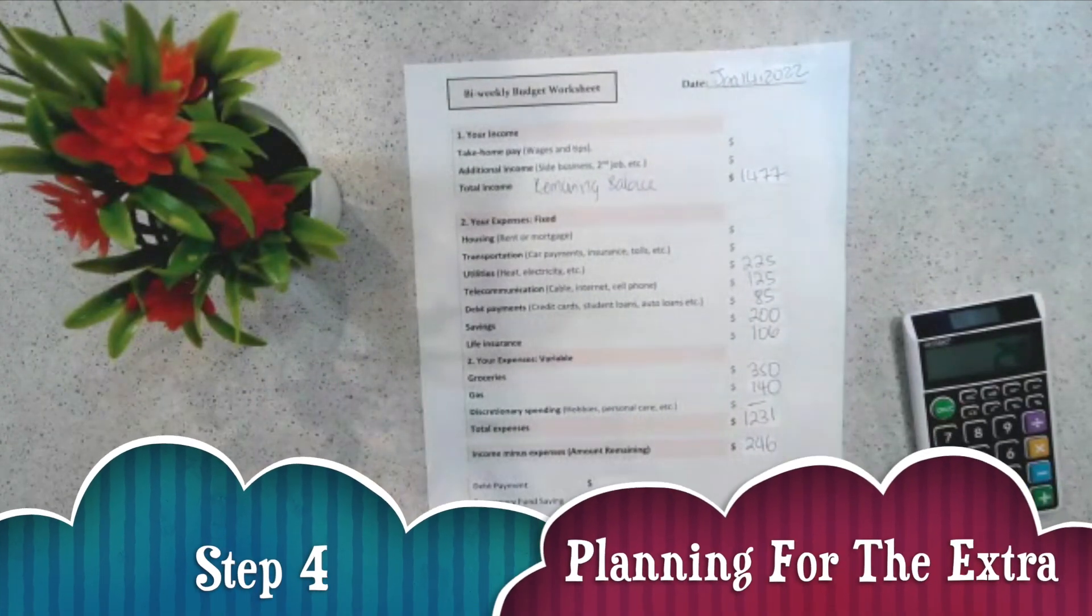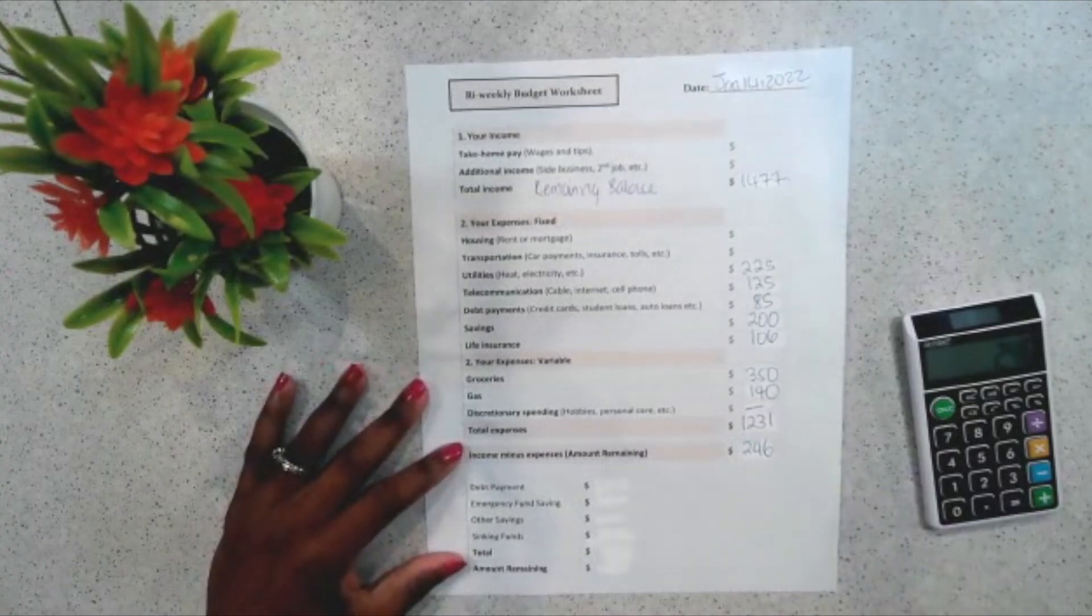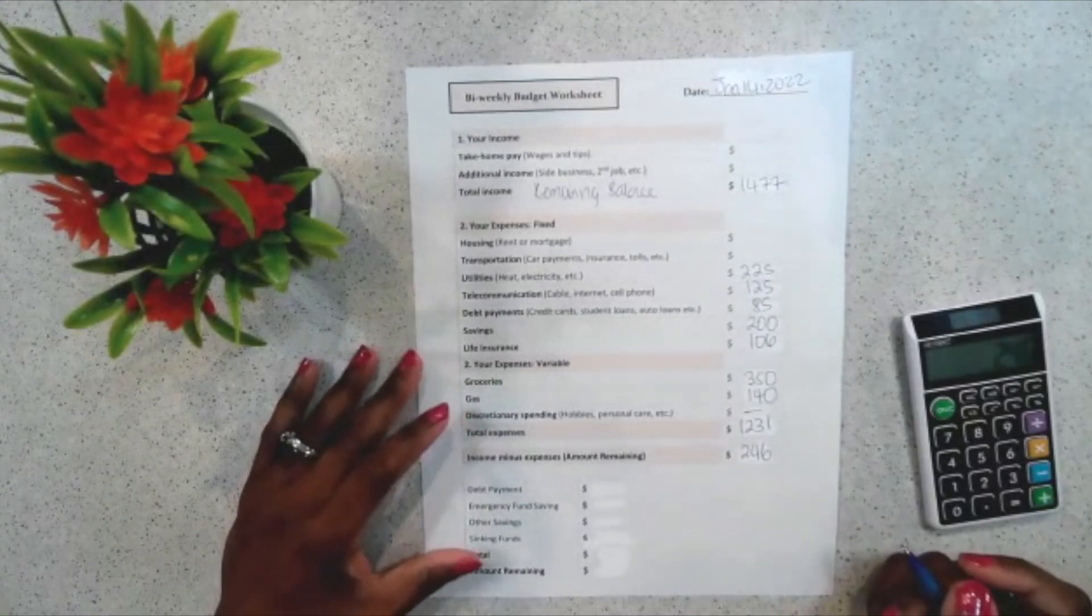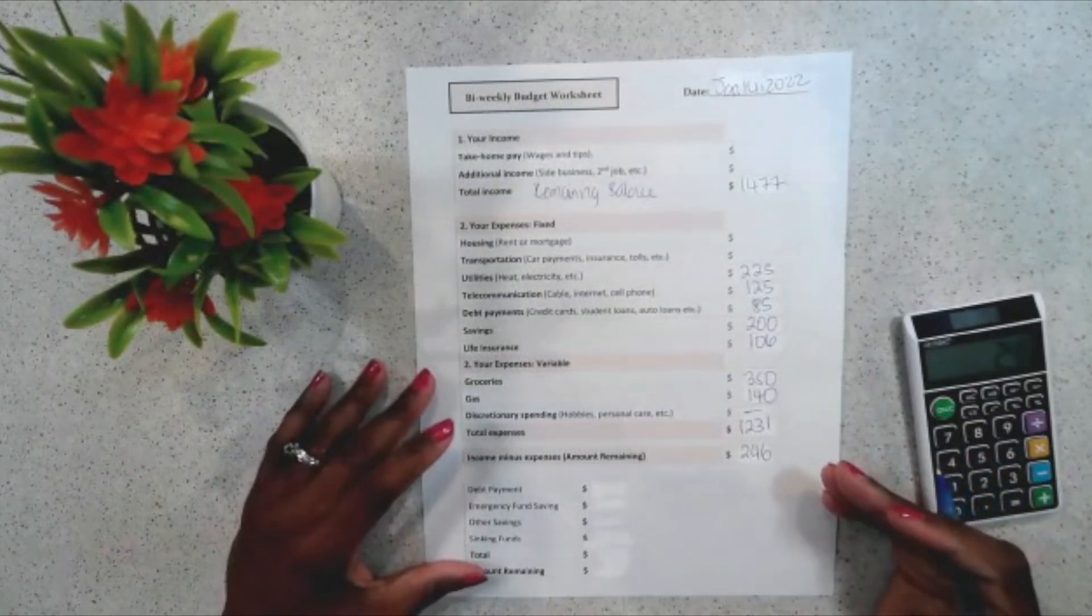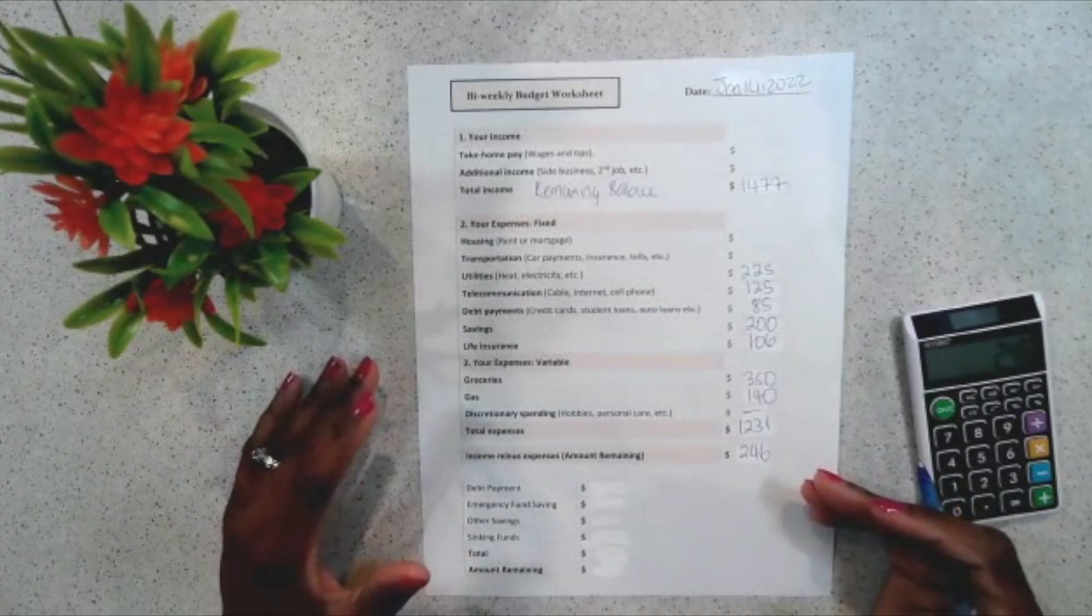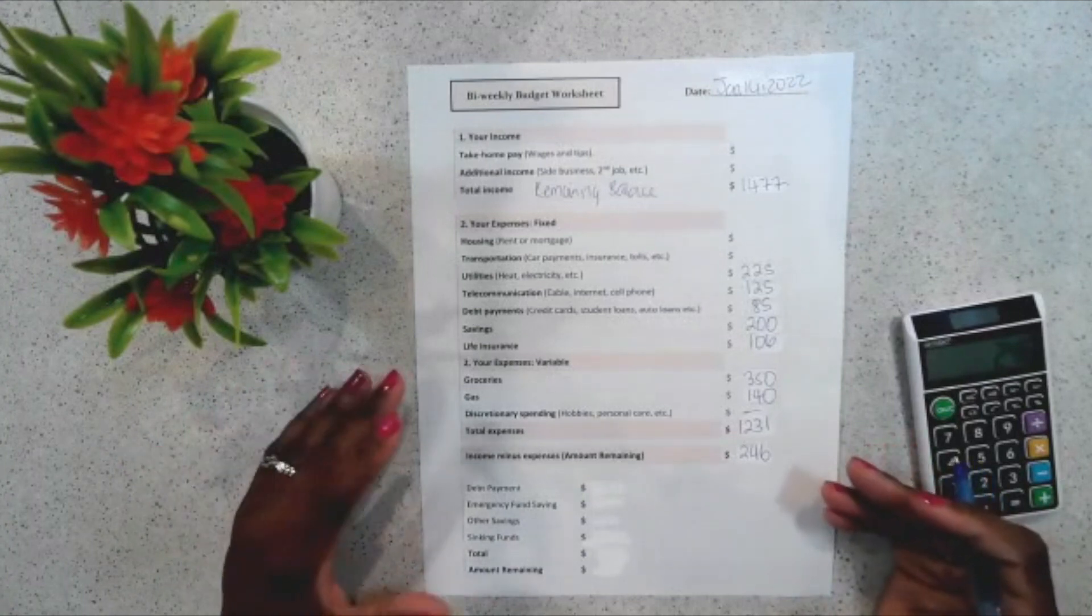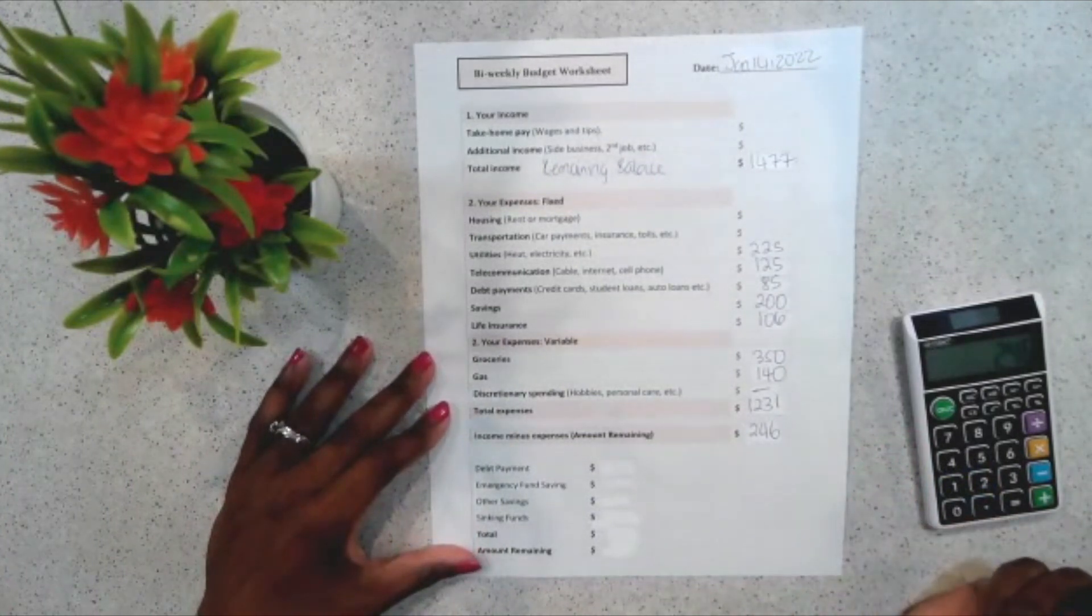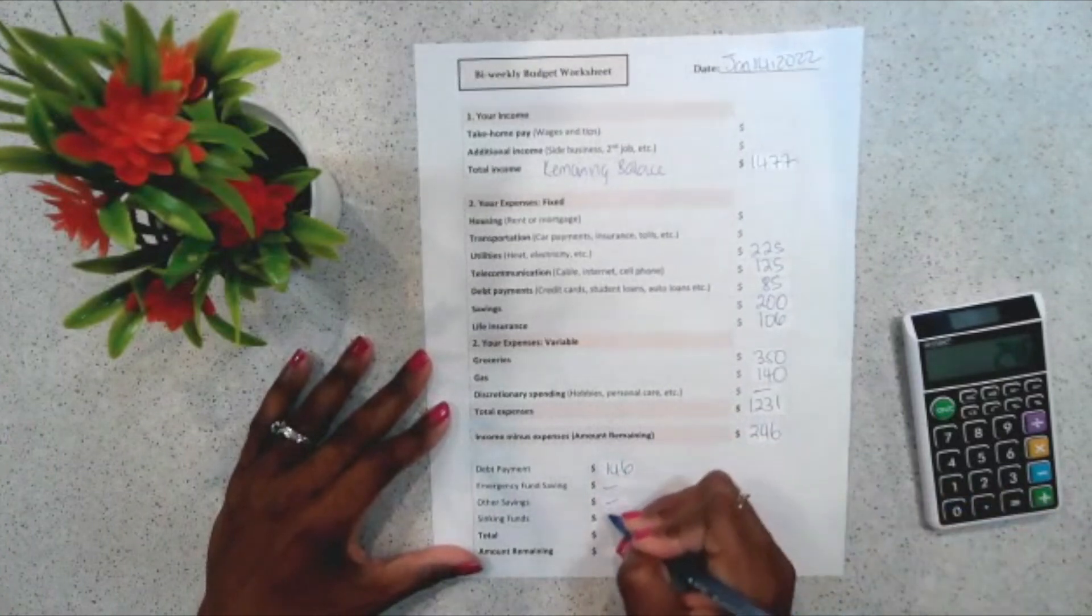So, step four is planning for the extra amount. Because I have an extra $246, how do I plan for that extra amount? So, in planning for the extra amount, it can either go to debt payment, emergency savings, other types of savings, or sinking fund. And sinking funds are amounts one set aside to go towards a specific expense in the future. For example, towards Christmas gifts, or car maintenance, or even a vacation. So, from the $246, I am going to channel $146 to debt payment. And then, I'm going to channel the remaining $100 to sinking fund.